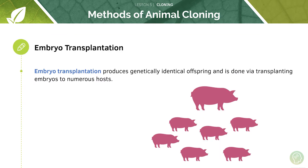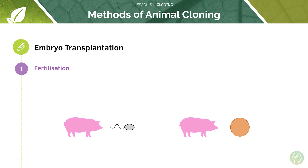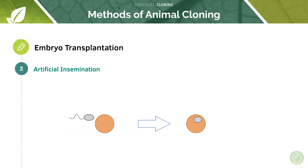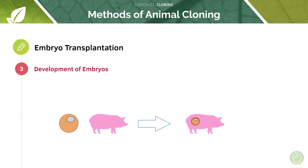Now let's look at how we might clone animals. Embryo transplantation produces genetically identical offspring and is done by transplanting embryos to numerous hosts. First, fertilisation takes place: sperm is taken from one animal and an egg from another. We then undergo a process called artificial insemination, where the sperm and egg are fused together artificially. Following artificial insemination, we get the development of embryos — the zygote, which is the fertilised sperm and egg fused together, is then allowed to develop into embryos.